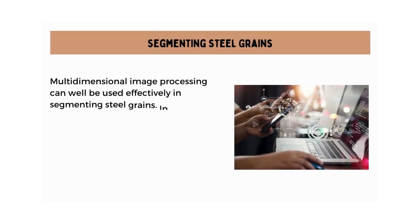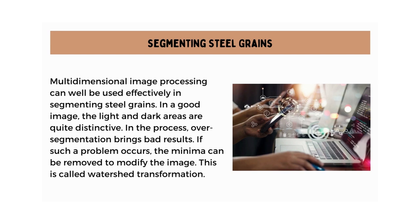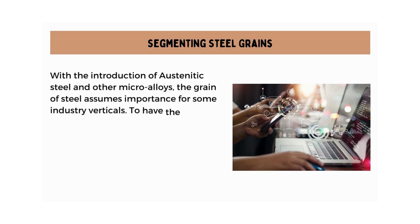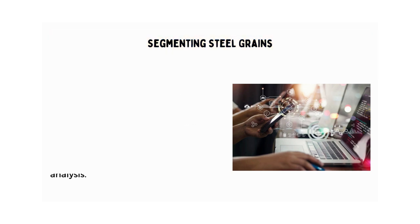Next, let's understand segmenting steel grains. Multidimensional image processing can be used effectively in segmenting steel grains. In a good image, the light and dark areas are quite distinctive. Over-segmentation brings bad results; if such a problem occurs, the minima can be removed to modify the image — this is called watershed transformation. With the introduction of austenitic steel and other micro-alloys, the grain of steel assumes importance for some industry verticals. To have the correct structural components, segmenting steel grains is critical, as it affects hardness, durability, and strength. Image enhancement ensures that the right grade of steel is made after grain analysis.